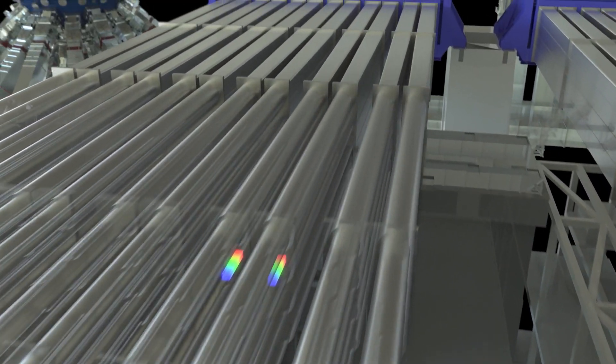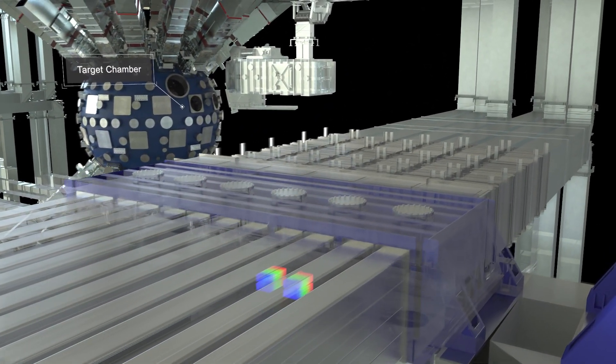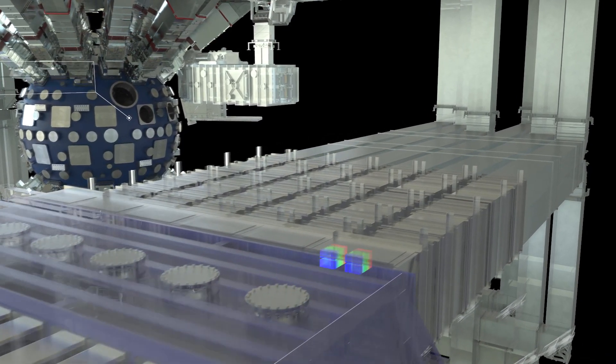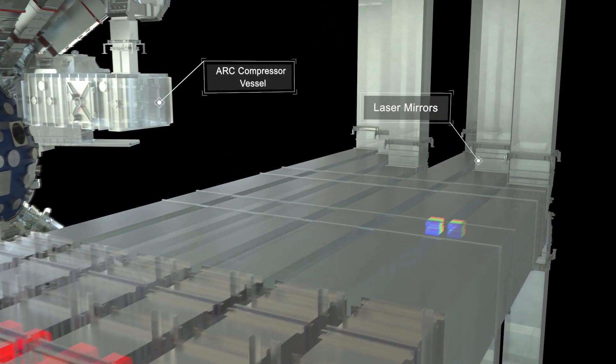After already being amplified by passing back and forth multiple times in the beamlines and on slightly different paths, both NIF and ARC lasers race to a spherical target chamber 30 feet wide.